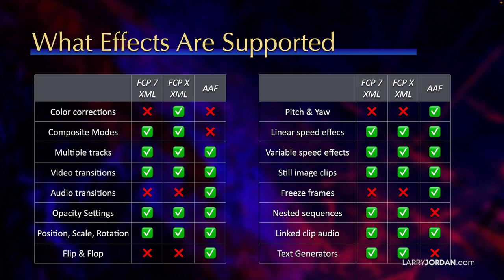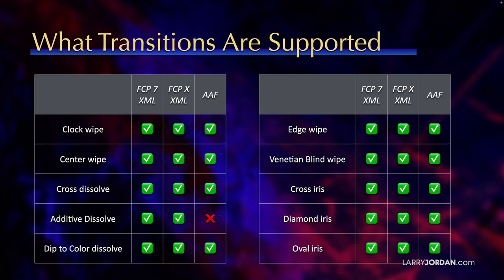Here you can see different effects: nested sequences are supported in both Premiere and Final Cut 10. Linked clip audio is supported across all of them. Text generators are supported, but with Premiere they don't work well. When we look at transitions, Final Cut 7 and Final Cut 10 — remember Premiere uses Final Cut 7 — support all of the supported transitions. AAF does not support additive dissolve.